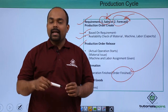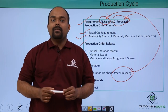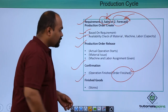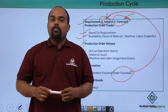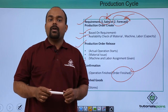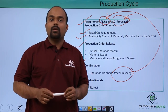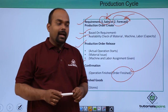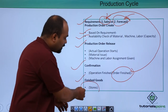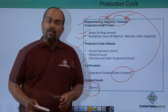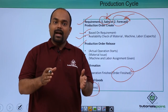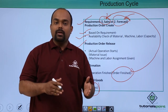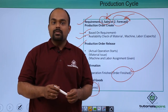Then the next step is finished goods. Whatever is manufactured — whatever operation was done on the raw material — will go towards the stores. The stores will record the data in SAP and store the finished goods material.